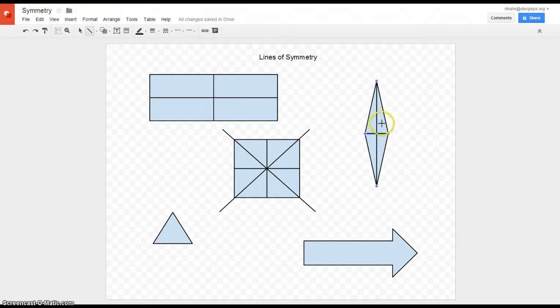So these two spaces up here to there should look exactly the same. So two lines of symmetry in a rhombus.